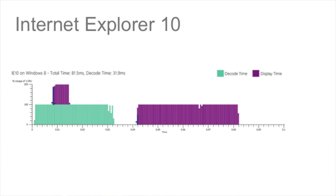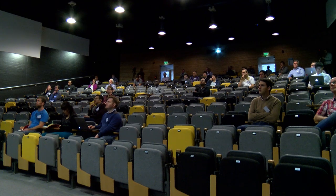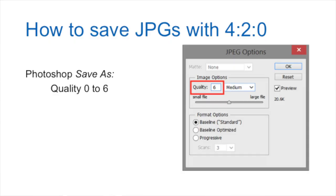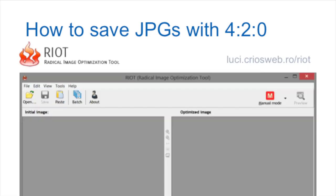Looking at the timing: in IE10 we averaged about 81 milliseconds, and we brought that down to 57 milliseconds to decode a chroma-subsampled JPEG. It's nice to pile up all these tricks and get it faster without web developers having to do very much. If you want to save your images with chroma subsampling in Photoshop, quality 0 to 6 will get you there. If you use Save for Web in Photoshop, quality 0 to 50 gets you to chroma subsampling — it really should be an independent control but it's not. Riot is one of the nicer tools I found that can just batch process a bunch of JPEGs on your site.